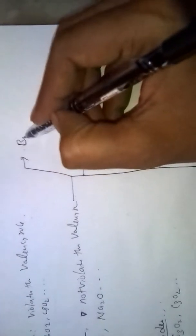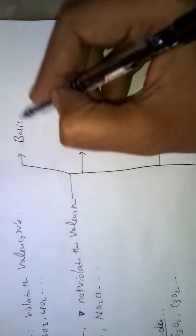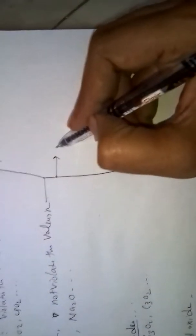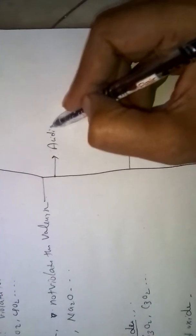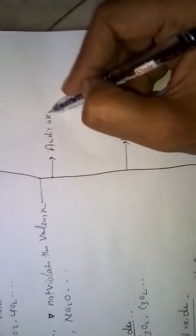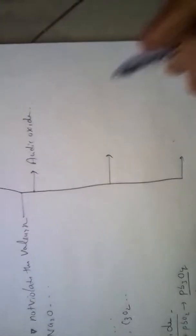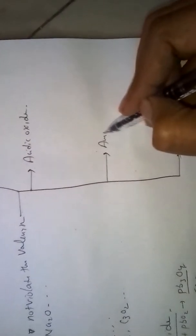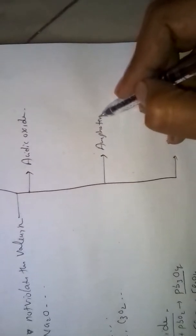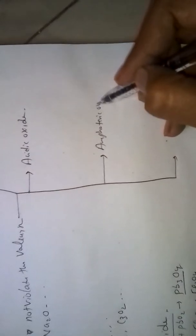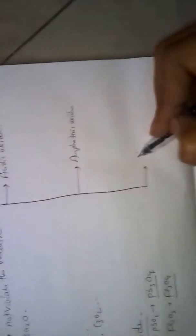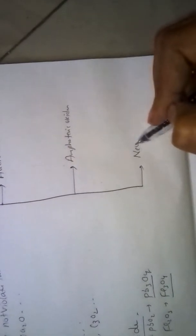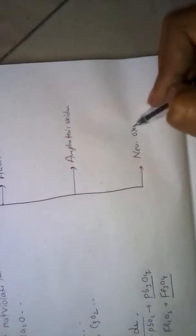Simple Oxides are again divided into 4 types: 1. Basic Oxides, 2. Acidic Oxides, 3. Amphoteric Oxides, 4. Neutral Oxides.